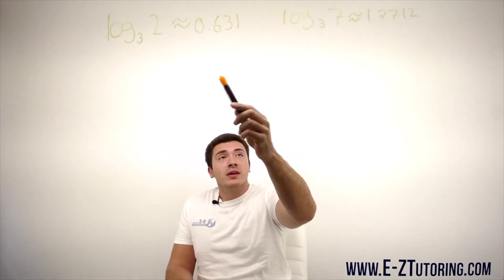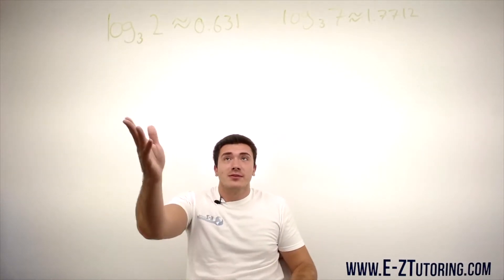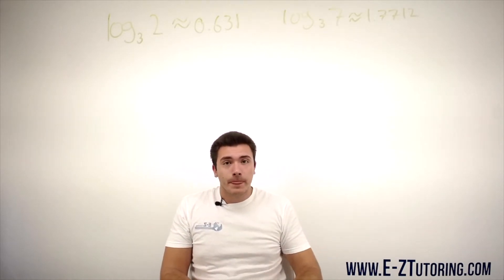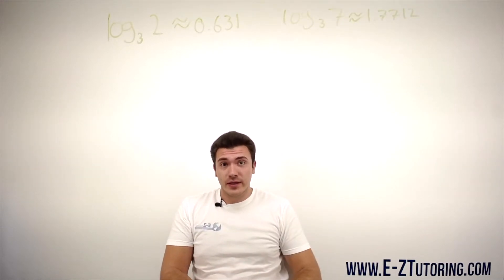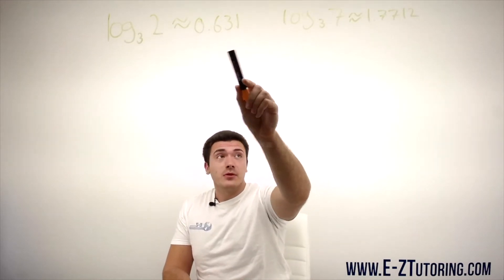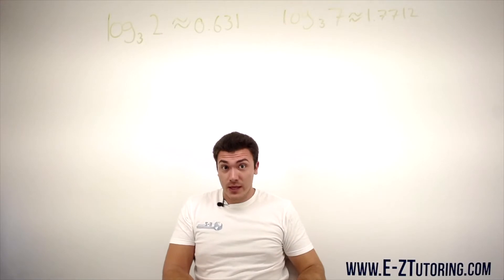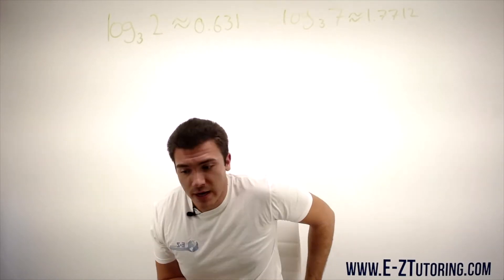So when we're given these values, log base 3 of 2 and log base 3 of 7, we have to rewrite our logarithm in terms of these logs and then we can simply substitute them with the numbers we know that they are equal to, and that's how you get your answer.